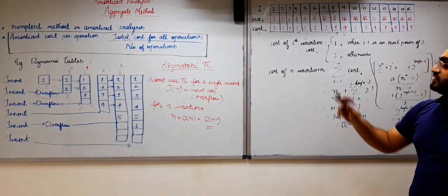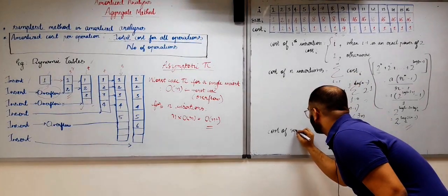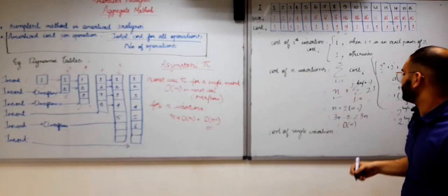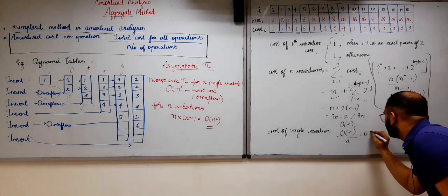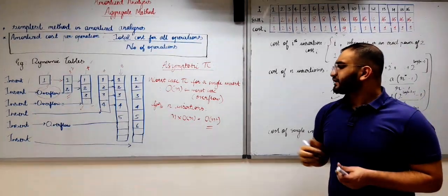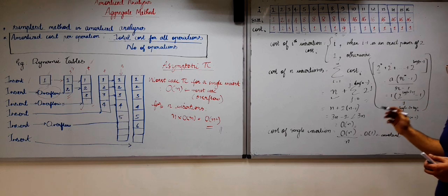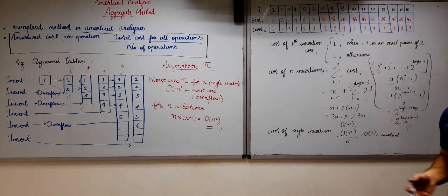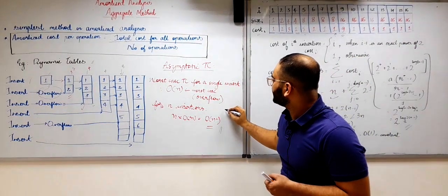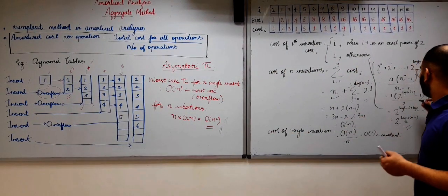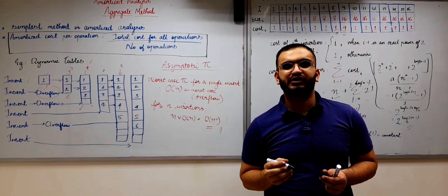The total cost for n insertions is O(n), and dividing by the number of insertions n gives the amortized cost per operation as O(1), or constant. Please keep in mind this derivation for amortized time complexity because it will be very useful when we solve the same dynamic tables problem using the accounting method and potential method in later videos. To summarize: the asymptotic method gave us O(n²) for n insertions, whereas the aggregate method gave us O(n) total and O(1) amortized per operation. That's all for this video. In the next video we will see the accounting method.